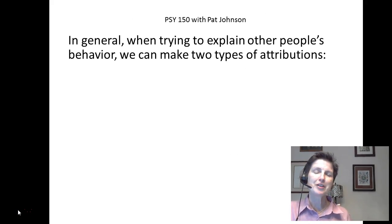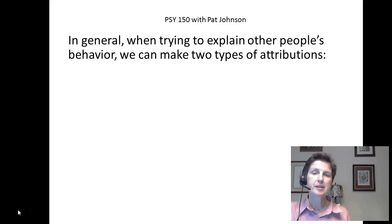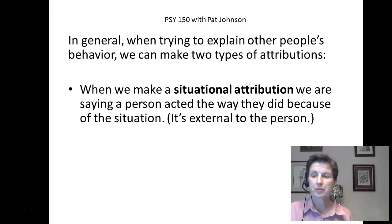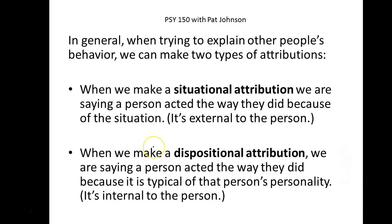In general, we can make two types of attributions. We can say that a person acted the way they did either because of the situation or because it's typical of that person's personality. A situational attribution means a person acted the way they did because of the situation — it's external to the person. A dispositional attribution means a person acted the way they did because it's typical of that person's personality — in other words, it's internal to the person.